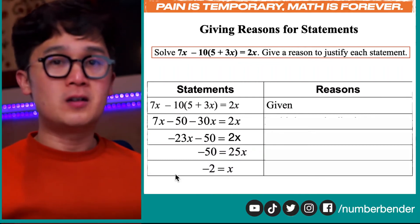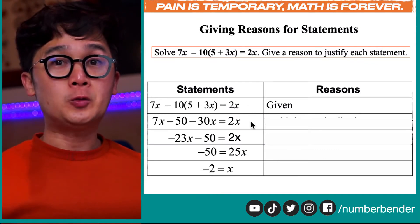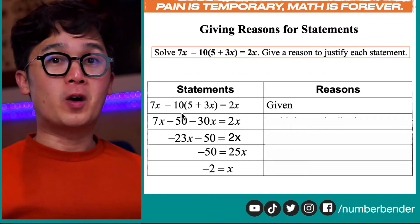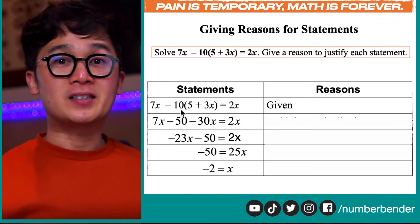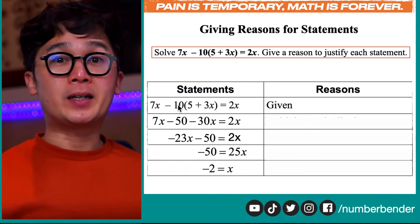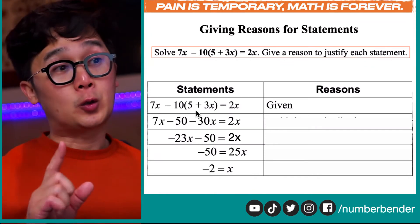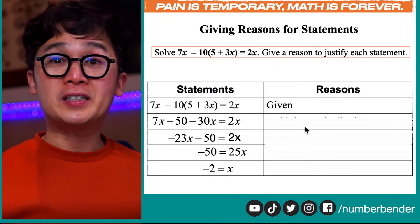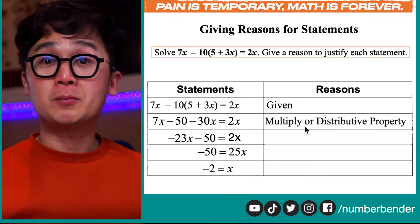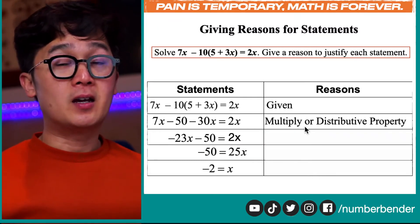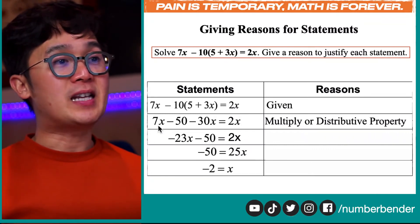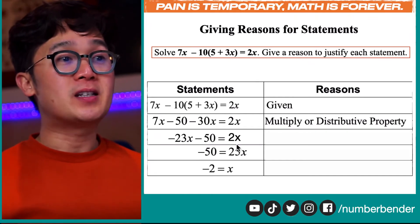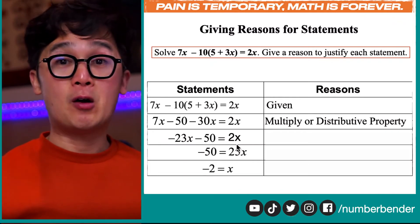For the second example, it's going to be a longer two-column proof because we need to show how we get from line 1 through line 5. From line 1, we have 7x minus 10 times the quantity 5 plus 3x is equal to 2x. We get to line 2 by multiplying negative 10 into the grouping symbol — this is the distributive property. From line 2 to line 3, we combine 7x and negative 30x, giving us negative 23x minus 50 equals 2x, so we use combining like terms as our reason for line 3.